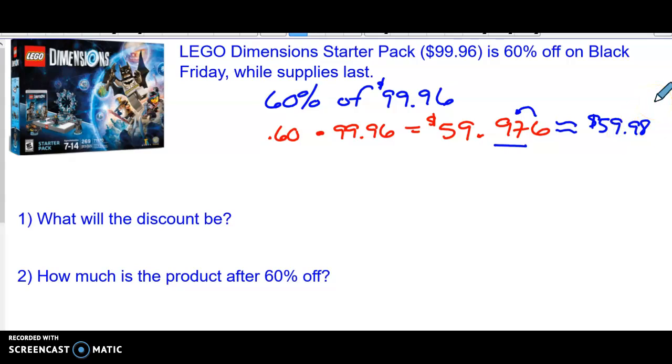Now, is that how much you're going to pay? Well, no, think about it. 60% is more than half. $59 is not more than half. That is actually called your discount. That's your discount. That's not how much it's going to be. That's your discount. Kind of like when you did the sales tax, that was your tax. But that's your discount.